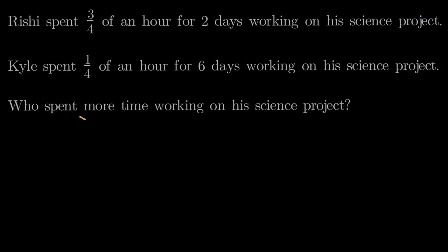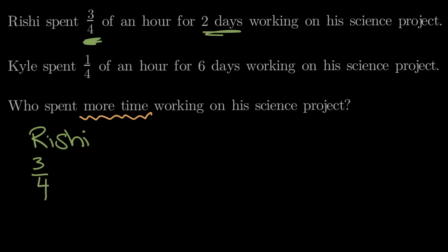So we want to know who spent more time, and to do that we need to first know the amount of time Rishi and Kyle each spent on their science projects. Let's start with Rishi. Rishi spent three-fourths of an hour for two days, so two times he spent three-fourths of an hour.